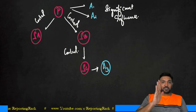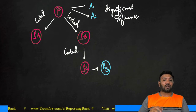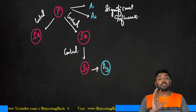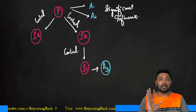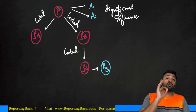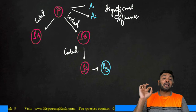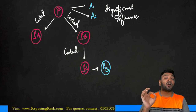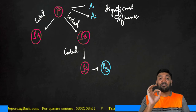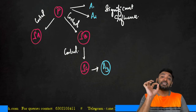From P Limited's perspective, all of SA, SB, SC are related parties due to control, and A1, A2, A3 are related because of significant influence — they are associates of P. From SA's perspective, P is related since P controls SA. SB and SC are also related because they are under common control with P.